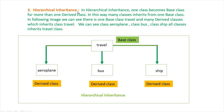Hierarchical inheritance. In hierarchical inheritance, one class becomes the base class for more than one derived class. In this way, many classes inherit from one base class.